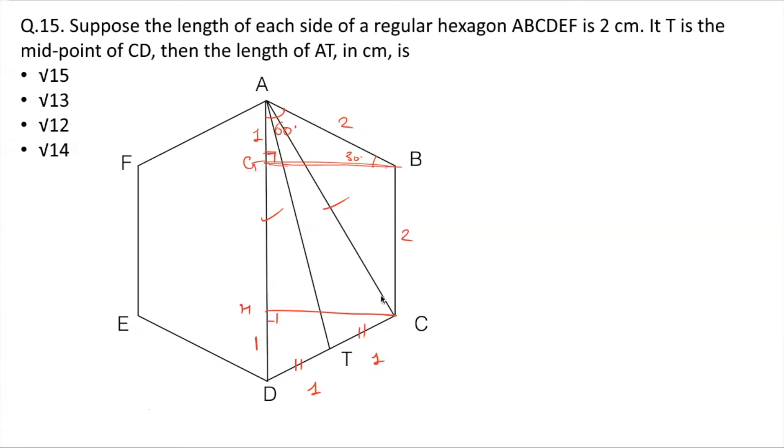Now observe that GBCH is a rectangle, this box here is a rectangle. So opposite sides will be equal. If this is 2, this length also is 2 units. That means I got the entire length of AD as 1 plus 2 plus 1, that is 4 units.